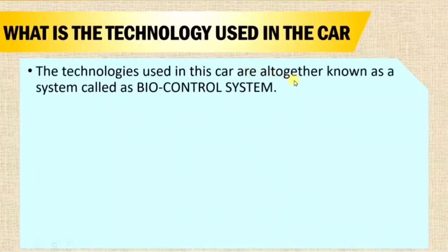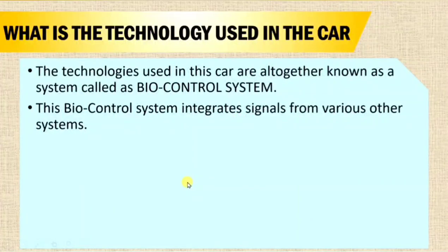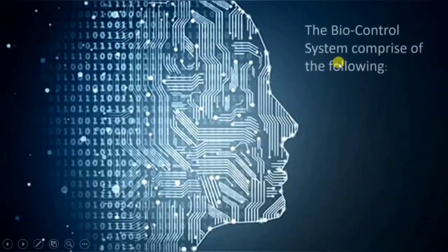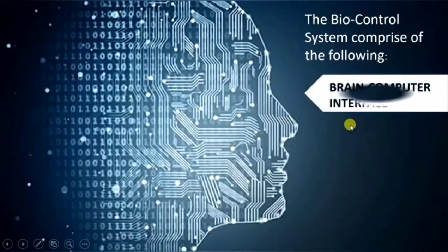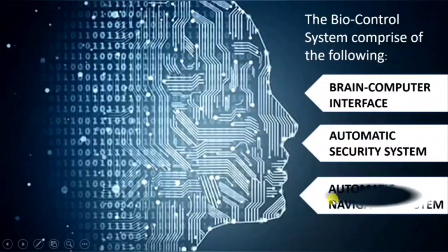This car uses the technologies of BCI and AI, and this combination is known as the Biocontrol System. The Biocontrol System integrates signals from BCI as well as AI, combining both signals to perform its tasks. It comprises three following technologies: Brain Computer Interface, Automatic Security System, and Automatic Navigation System.